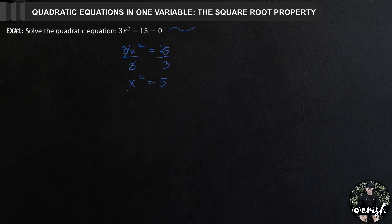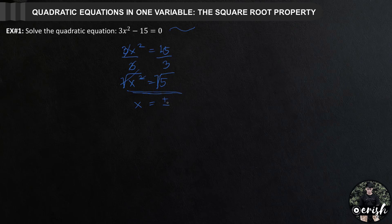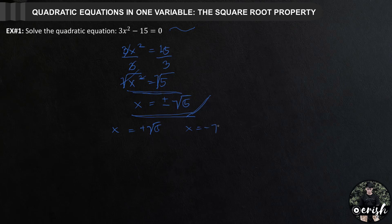In this simplified equation, we can now apply the square root property. Taking the square root of both sides, this is x equals positive or negative square root of 5. So that is our answer. For the last step, if we are going to check both proposed solutions — x equals positive square root of 5 and x equals negative square root of 5 — we will confirm whether our solutions are correct.